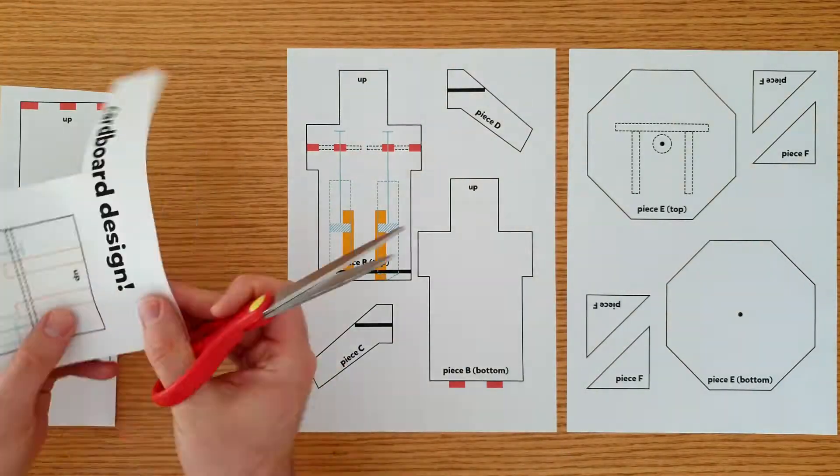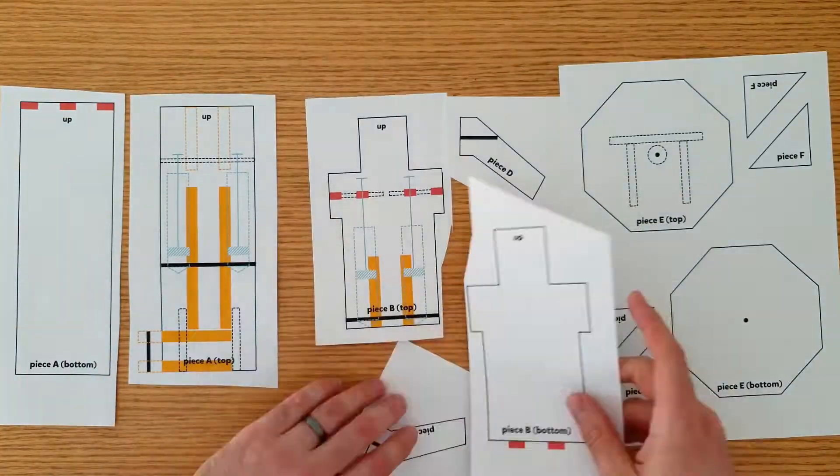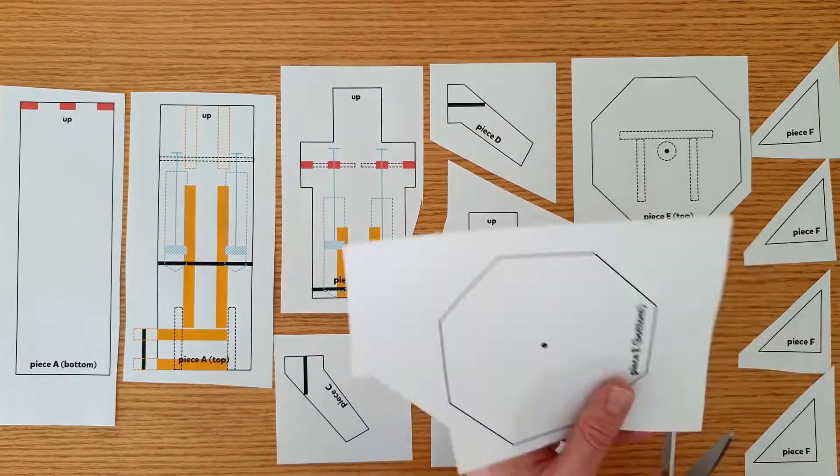Once you've got all these items, you're ready to go! Start by cutting out each piece of the cardboard design. You don't have to cut along the lines perfectly at this point.